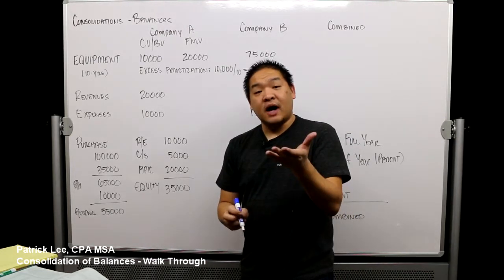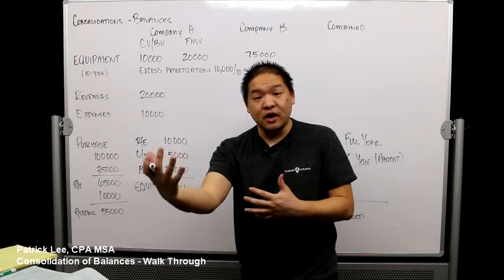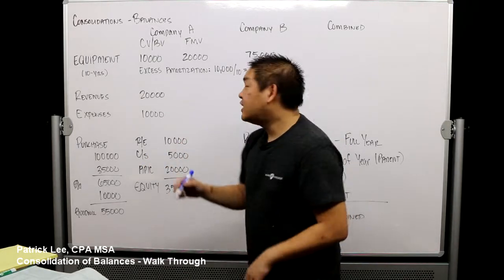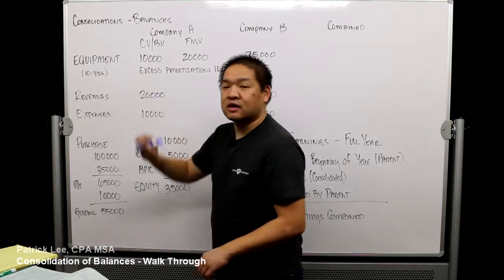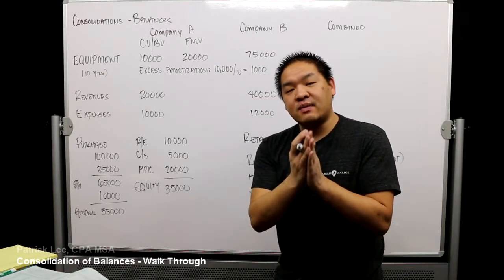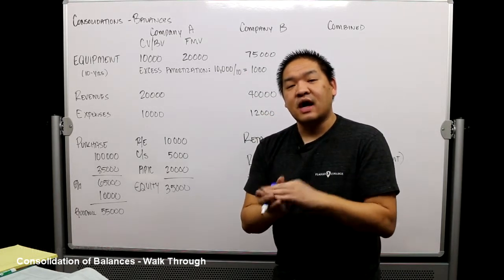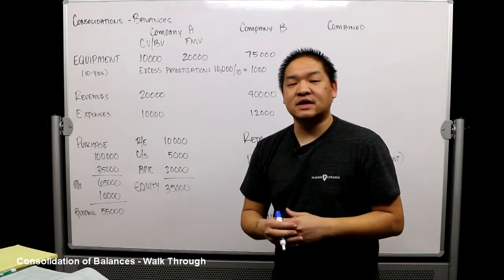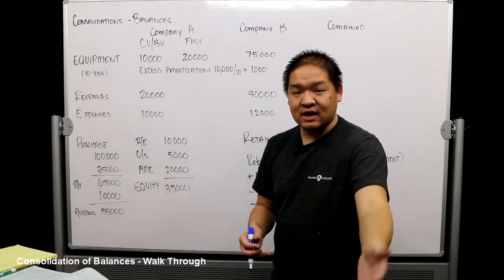When we buy an organization we buy them at their fair value — we don't buy their equipment at book value, we buy it at fair value. In this case we had what we call excess amortization of $10,000, so we would step up by $10,000. Now because we're keeping separate books, when we're looking at two trial balances they're still going to report their carrying value of that equipment at $10,000. So when we consolidate we have to step up that basis and also decrease it by the excess amortization we're taking in that year.